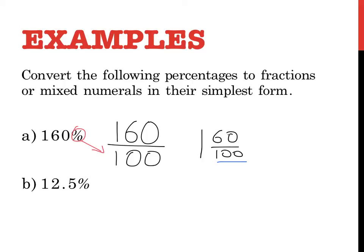I'm hoping some of you can see that 60 and 100 are divisible by 10, so I need to simplify it to 1 and 6 over 10. And then you can see that 160% is the same as writing 1 and 3 over 5, because I divided 6 by 2 to get 3 and I divided 10 by 2 to get 5. So 160% as a mixed numeral in its simplest form is 1 and 3 over 5.